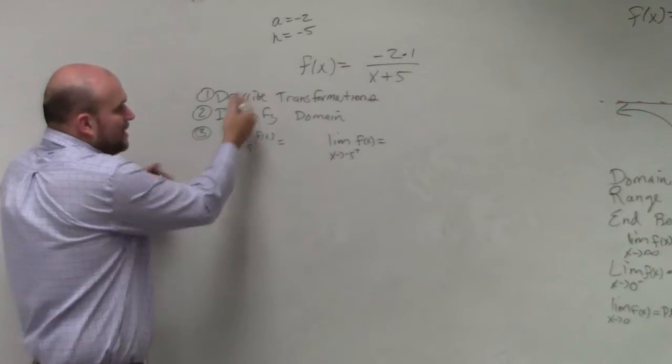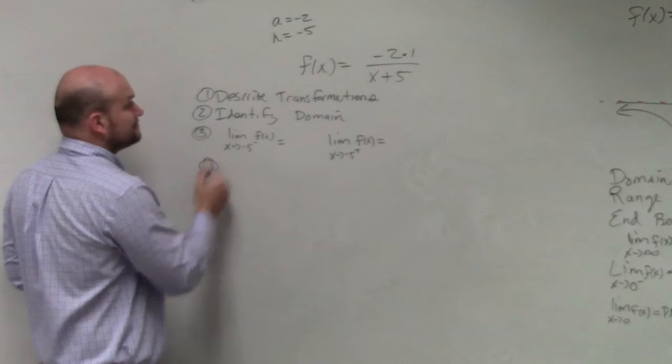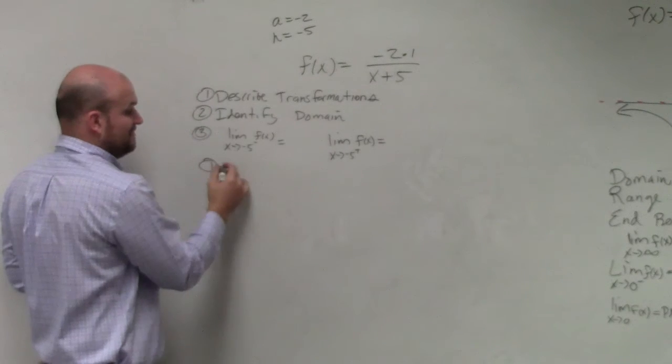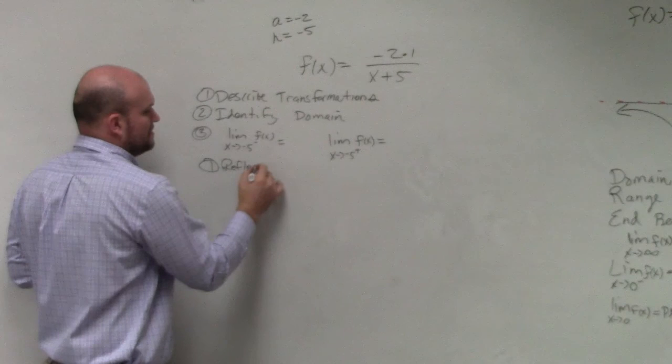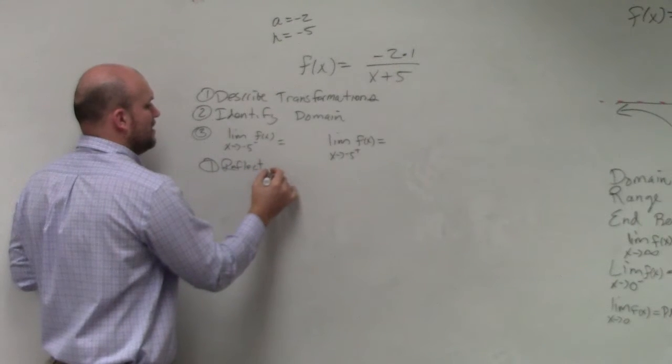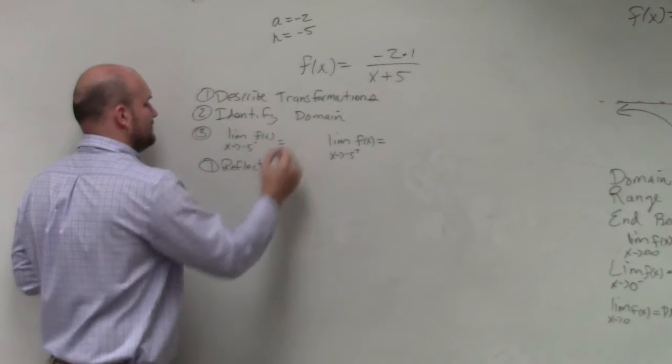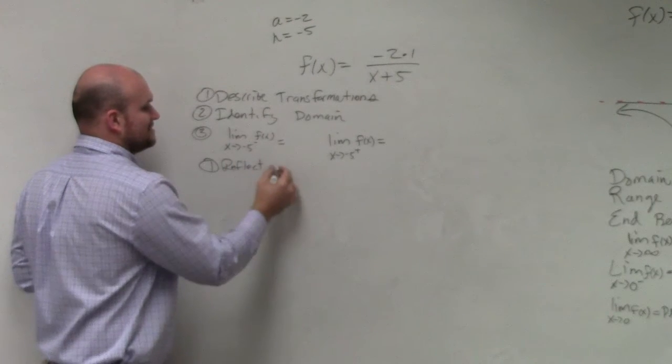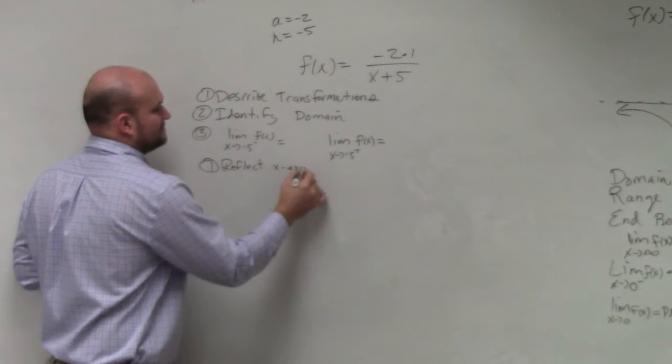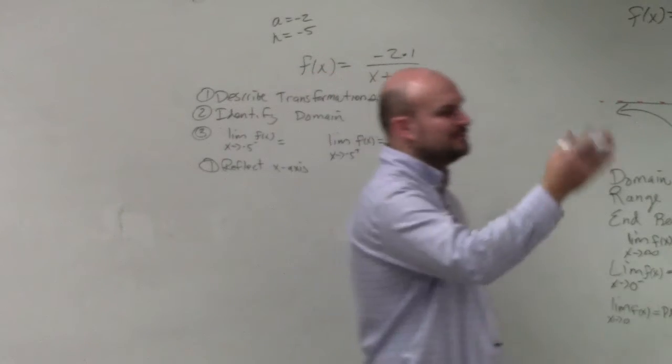All right, so now we need to remember what exactly these are for our transformations. So a is negative. If it's negative, that means it reflects over the x-axis.